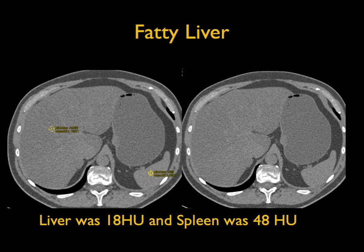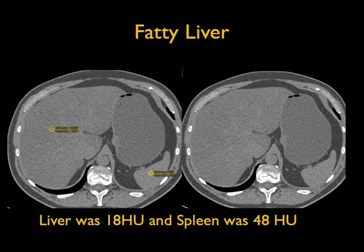Here's a nice example of fatty infiltration of the liver. The patient also has textural change with a prominent caudate lobe. Using a one-centimeter circle for measurement, the liver was 18 Hounsfield units and the spleen was 48. This is surely fatty infiltration of the liver — non-contrast under 40 is fatty infiltration, and the liver is also less dense than the spleen by more than 10 Hounsfield units.